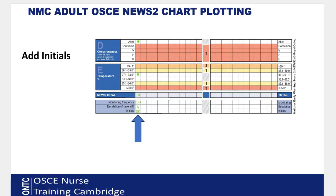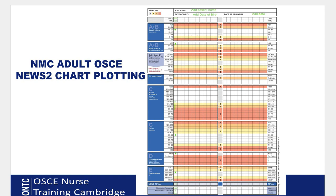Finally, add your initials in the last box and your NEWS charting is complete. In the exam you will be doing real-time vitals on the actor and plotting them in real time, then calculating your NEWS score in real time. Your score may be zero or higher depending on the patient's actual vitals that day.